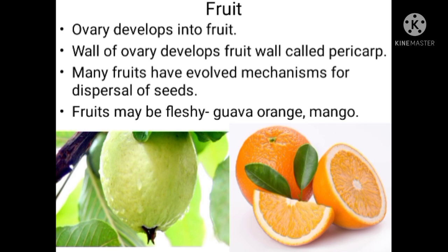The wall of the fruit is called the pericarp. The wall of the ovary develops into the wall of the fruit, which is called the pericarp. The mature pericarp may be fleshy or dry, and accordingly the fruit can be classified into fleshy fruit or dry fruit. Fleshy fruits have a fleshy pericarp — for example, guava, orange, and mango.